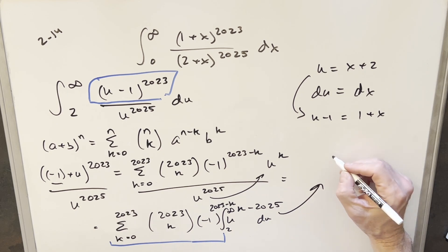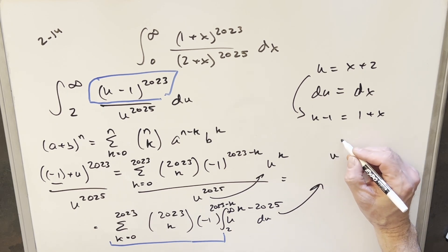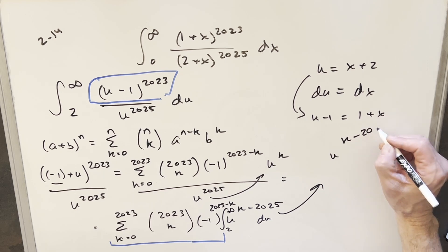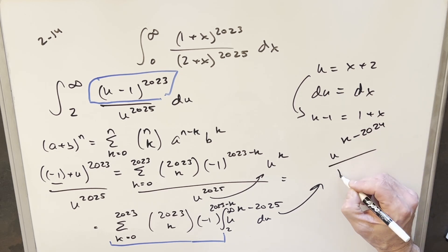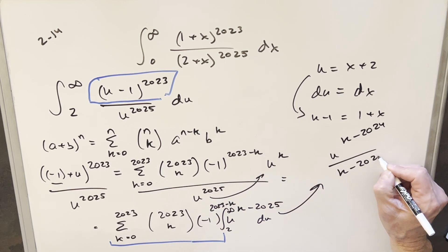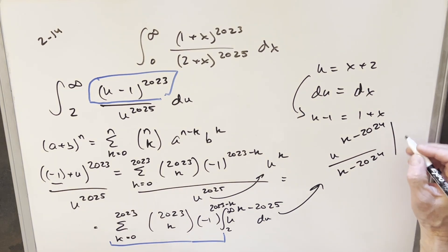So integrating this thing, it's just going to be power. Let's just see what this is going to look like. This is going to be k raising the power. We're going to have k minus 2024 over k minus 2024. And this thing, of course, is going to be evaluated from two to infinity. But let me clean this up as I know I've made a complete mess right now.